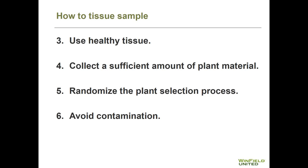The fifth step is to randomize the plant selection process. It may be wise to select plants from a good part of the field as well as a more challenged part of the field, but within those parts of the field, don't look for the worst plants or the best plants — take a random selection of representative plants within those different parts of the field. And finally, the sixth step is to avoid contamination — trying to avoid any type of soil or dust that may be present on the leaf surface, because these can affect the amount of nutrients analyzed. If the leaves are dusty or dirty, wash them with some water and dry them before putting them in the package and sending them off to the laboratory.